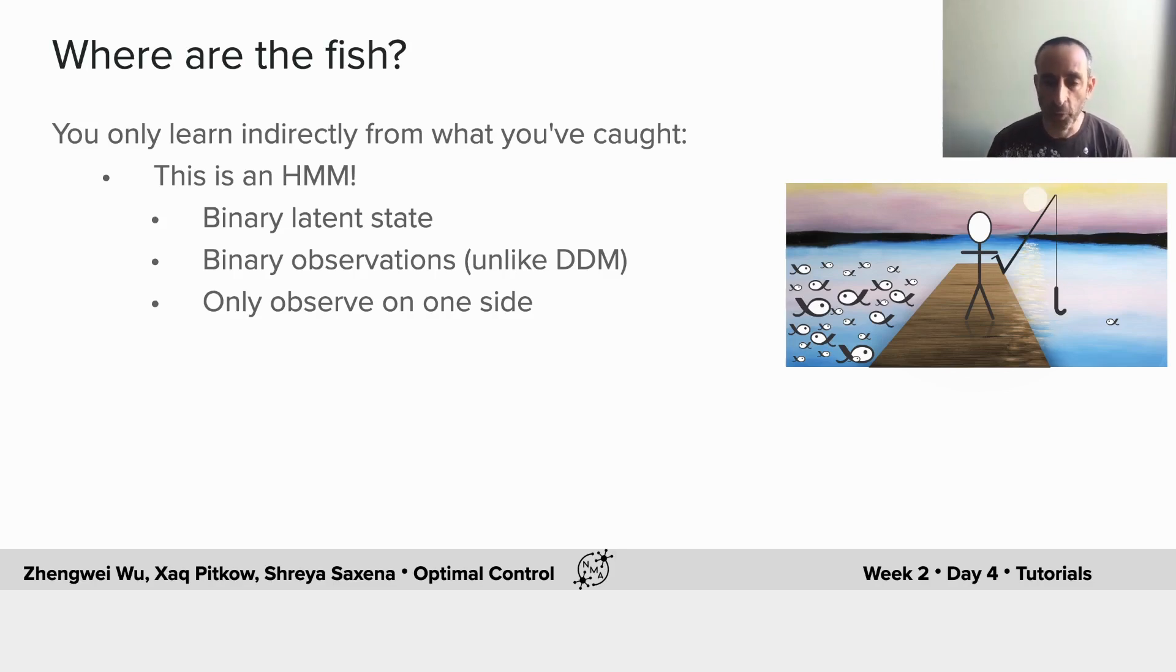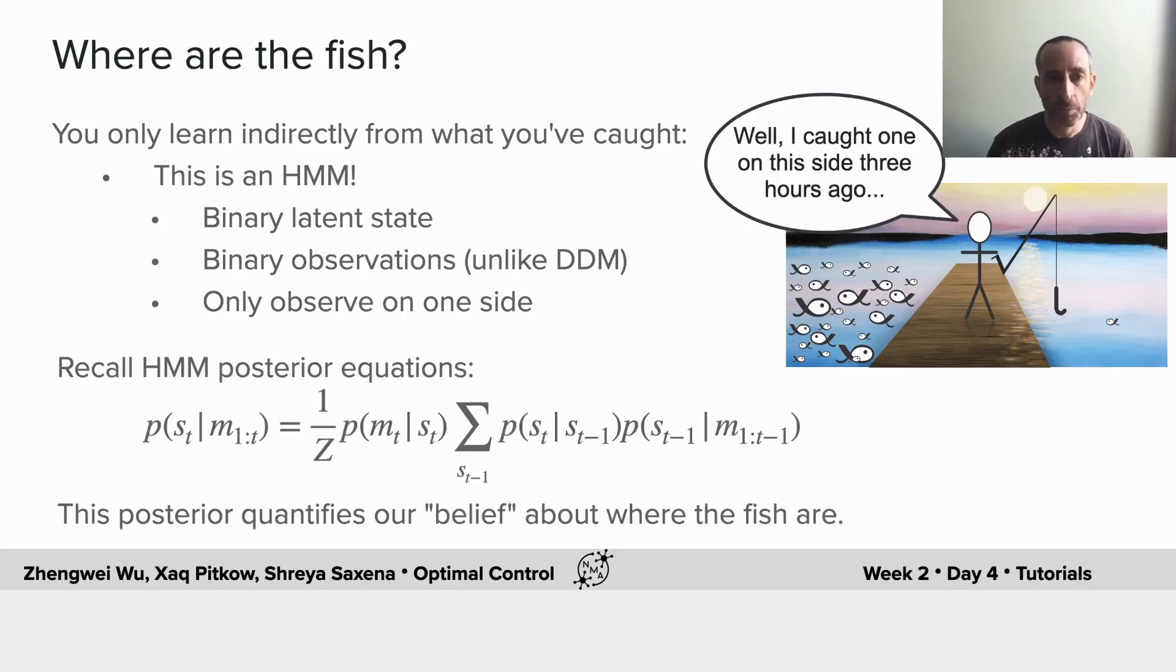Also unlike before, you're only observing on one side, which means that the quality of your evidence is time dependent. Nonetheless, you can still use the same recurrence equations that we saw for the hidden Markov model, which expresses the probability that the fish are in a given state, given all of the measurements up till that time, as a product of the measurement probability for the fish being in a state, times the prediction of the fish being in that state, given the past evidence. We saw this yesterday.